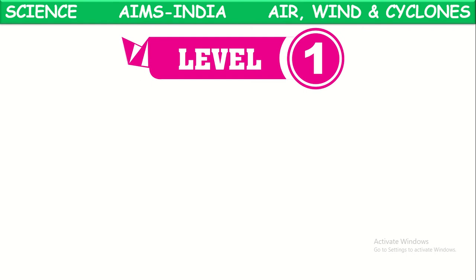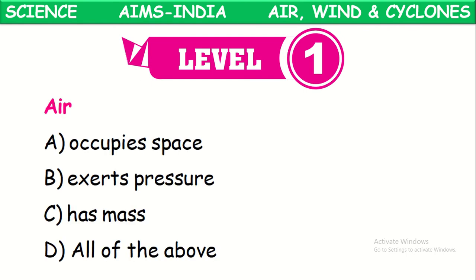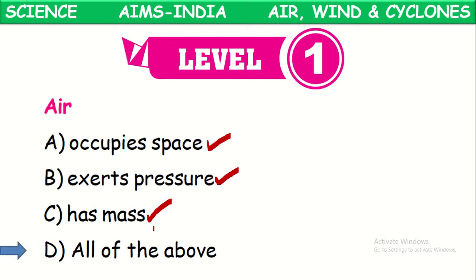First let us go through the level one questions from this practice sheet. The first question is about air — certain properties are given. Air occupies space. Yes, air occupies space. Air also exerts pressure in all directions, and air occupies all available space. Air has fixed mass too. So all of these are correct regarding air and its properties. The correct option is: all of these.